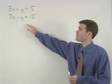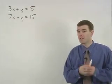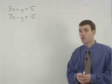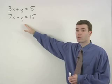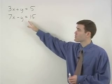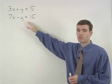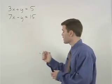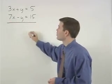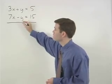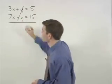To solve this system of equations by addition, our first goal is to cancel out one of the variables by adding the two equations together. Notice that if we add these two equations together, our plus y and minus y will cancel out.